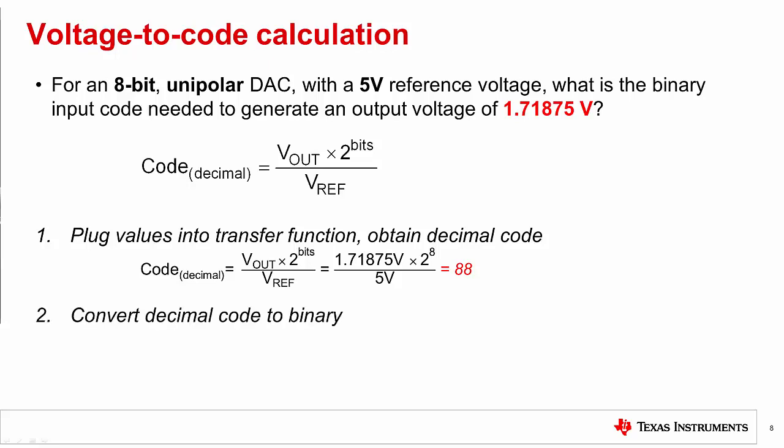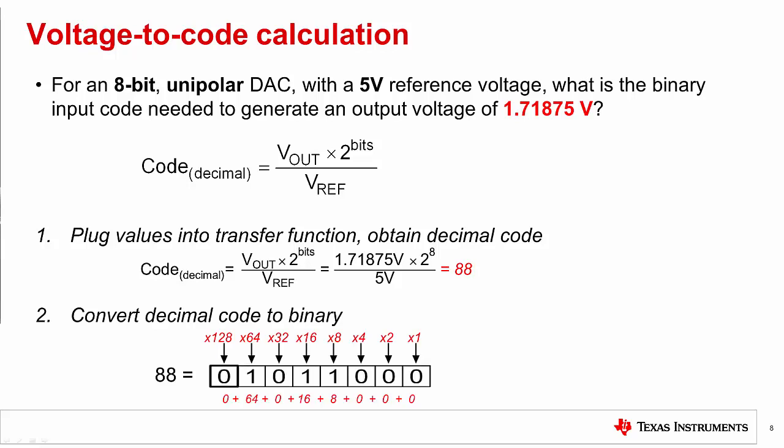Now let's convert 88 back into binary. By looking at each bit weight, we can determine that this becomes 01011000. If you inputted this to the specified DAC, you would ideally see the 1.718 volts.